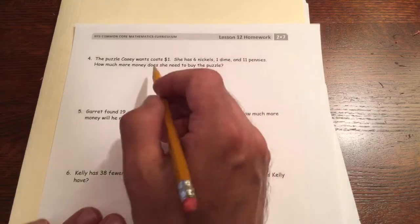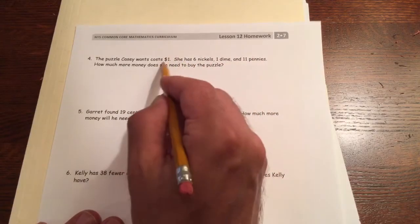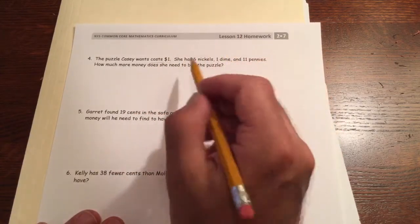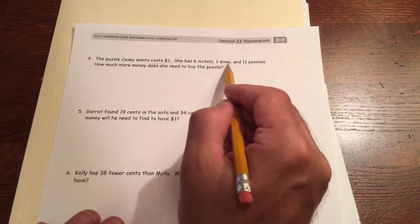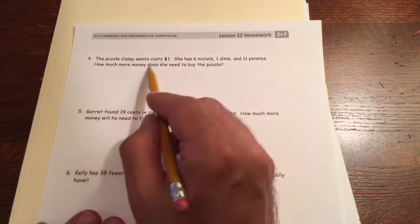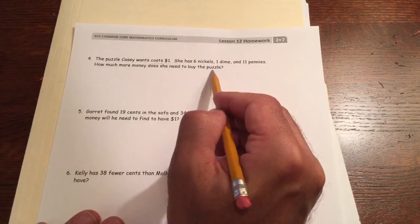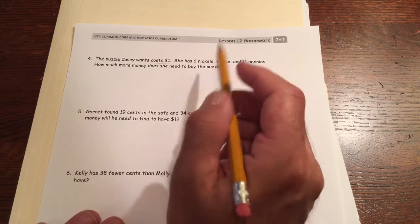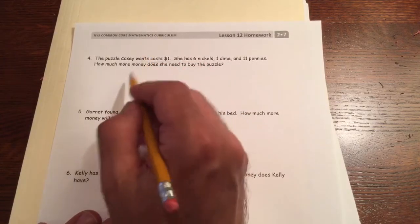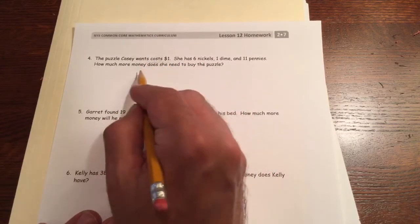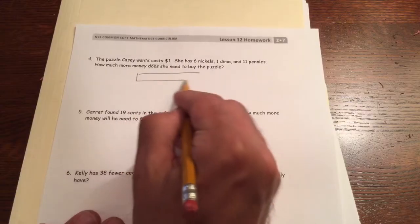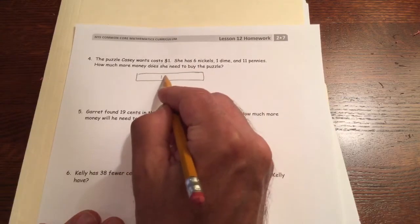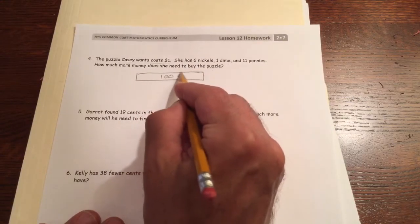The puzzle Casey wants costs a dollar. She has six nickels, a dime, and 11 pennies. How much more money does she need to buy the puzzle? She doesn't have enough money. The whole puzzle costs 100 cents because that's the same as a dollar.